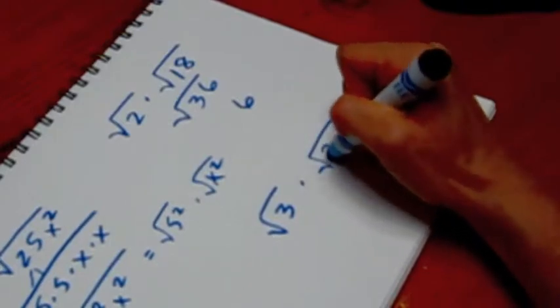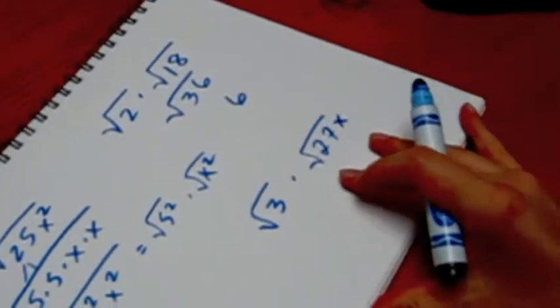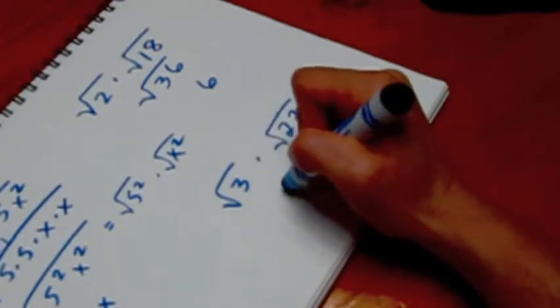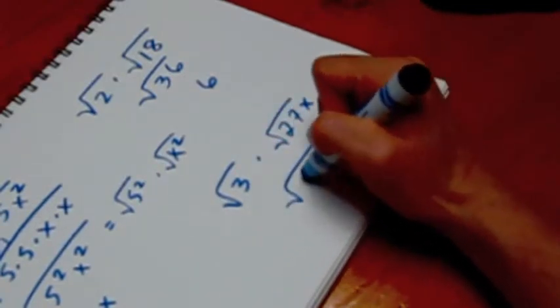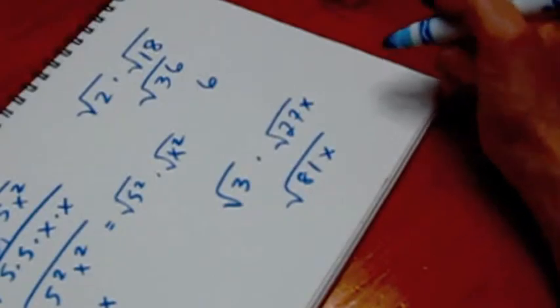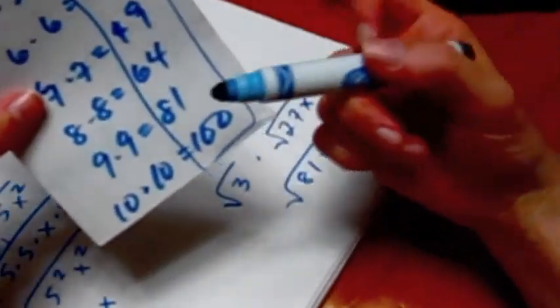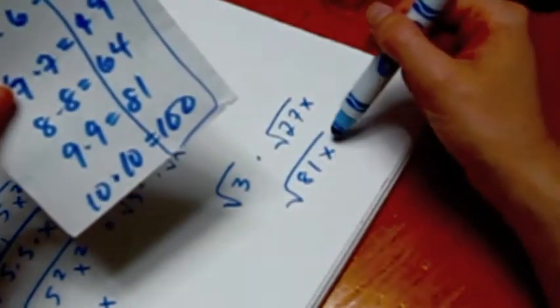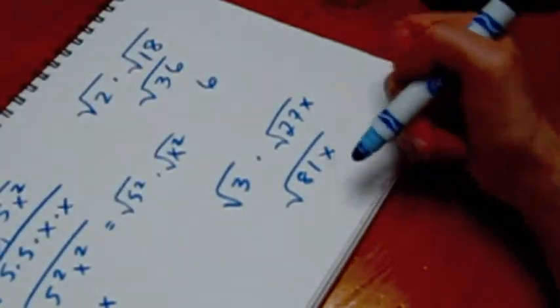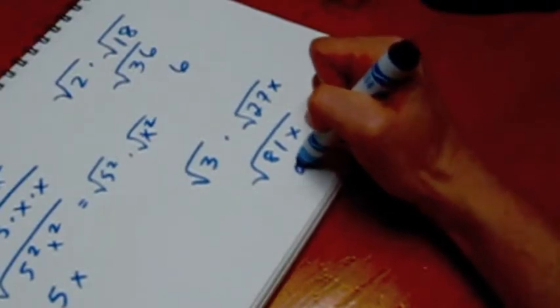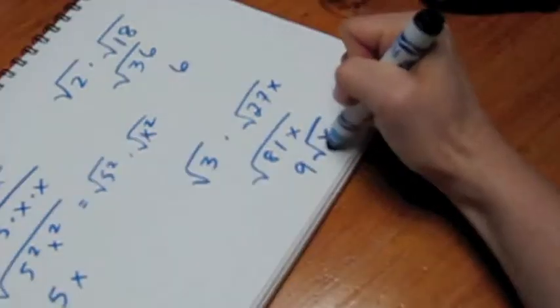Take a look at this one. We have the square root of 3 times the square root of 27x. Again, it makes sense to put them together because 3 times 27 is 81. Well, I know 81 is 9 squared, so if I take the square root of that, it's 9. So the 9 can come out, but the x does not have a partner, so it has to stay in.